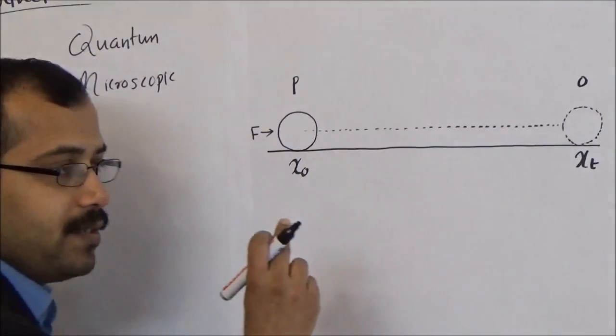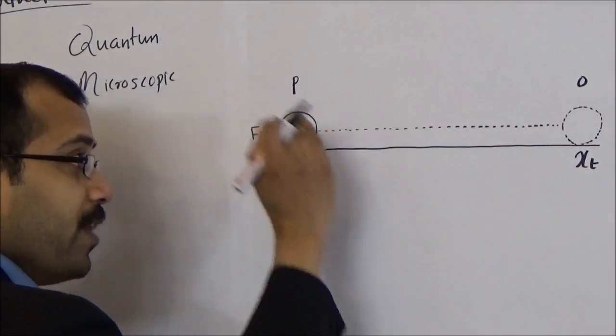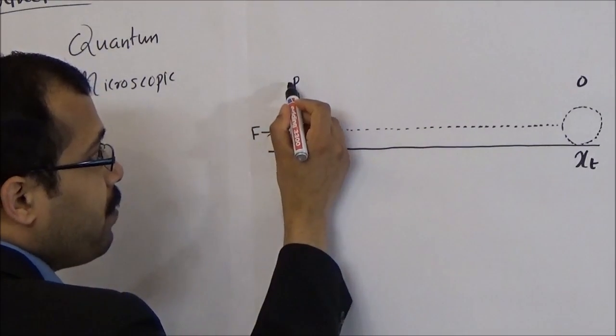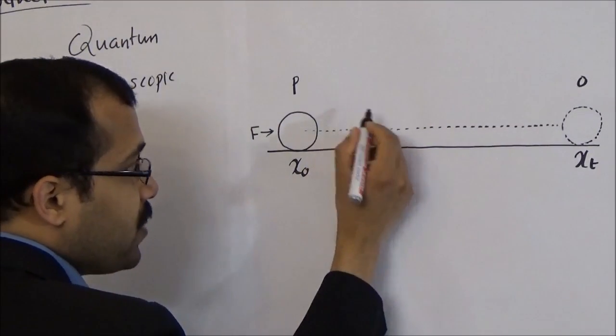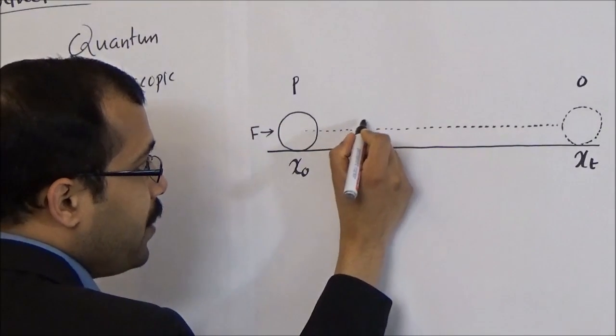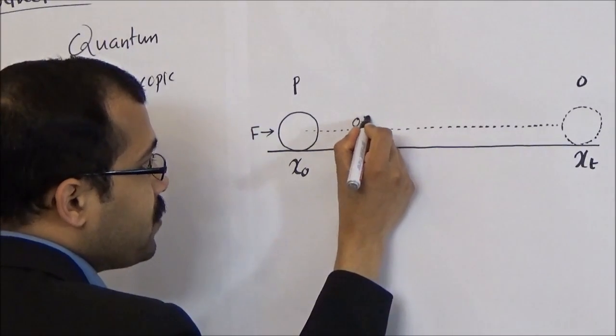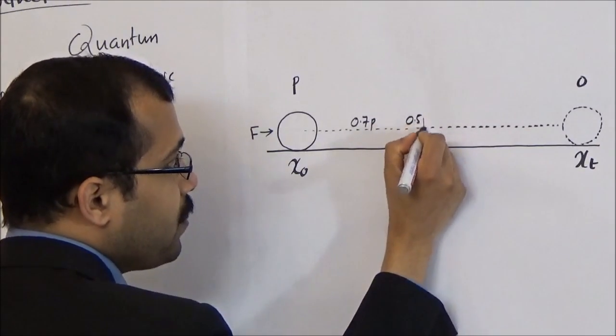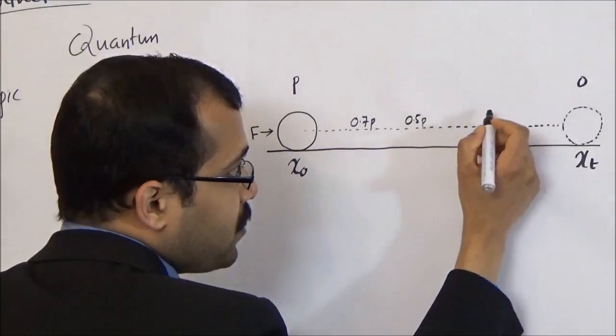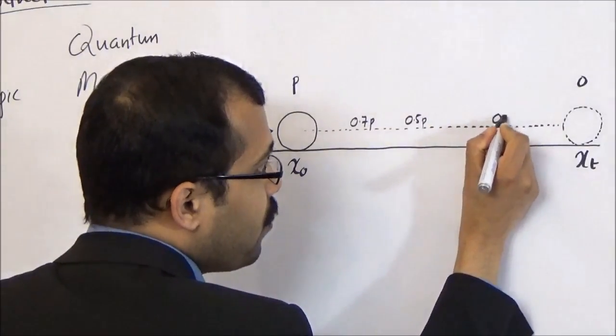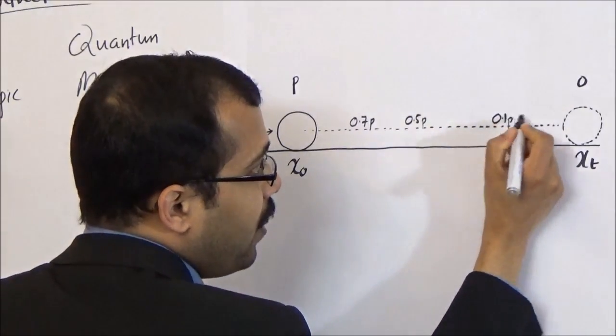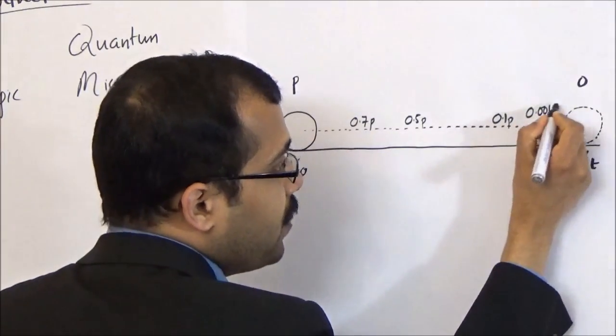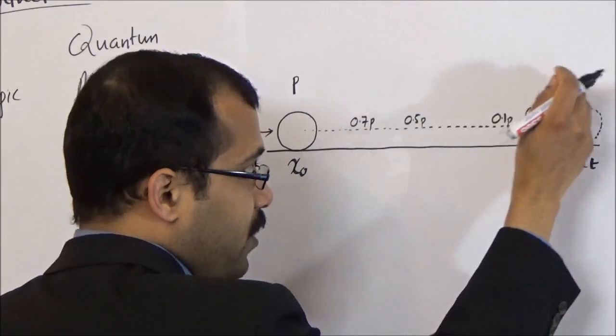It starts with the momentum P. After a certain time, for example, the momentum will be 0.7P, and after some time it will be 0.5P, then after a certain time it will be 0.1P and 0.001P, then it comes to rest with the momentum 0.